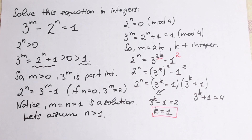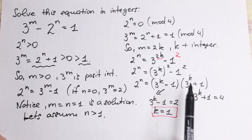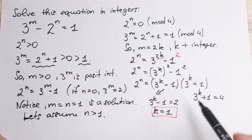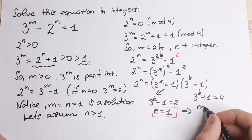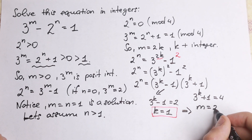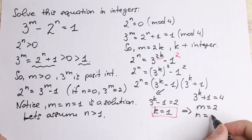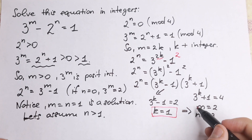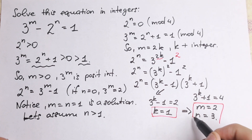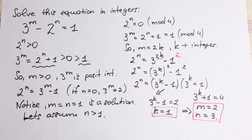What about the solution? If k equal to 1, then going back to our substitution m equal to 2k, we get m equal to 2. And it's not hard to see that n will be equal to 3. So we have another solution: m equal to 2 and n equal to 3.